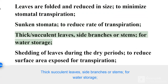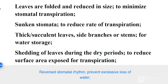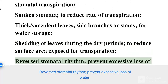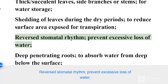Thick succulent leaves, side branches or stems for water storage. Shedding of leaves during dry periods to reduce surface area exposed for transpiration. Reverse stomatal rhythm to prevent excessive loss of water.